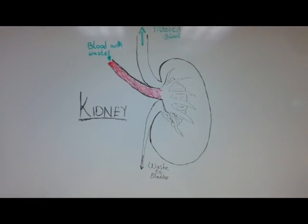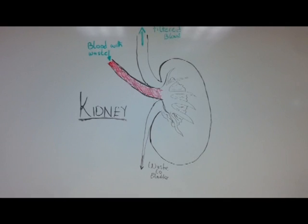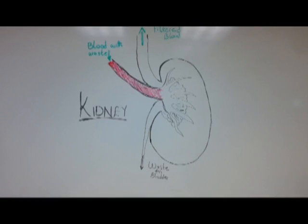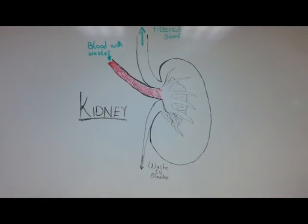The kidney is a bean-shaped organ that is the size of a fist. The functions include preventing the buildup of waste and extra fluid in the body, keeping levels of electrolytes stable such as sodium, potassium, and phosphate. They make hormones that help regulate blood pressure, make red blood cells, and keep the bones strong.